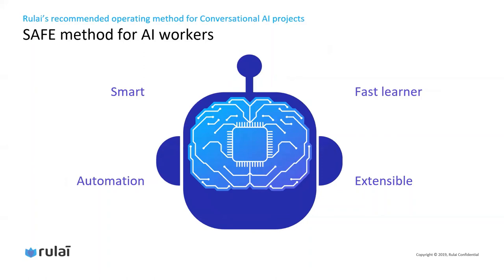That's why we introduced the SAFE method for conversational AI projects. Based on the SAFE method, the project can systematically develop AI workers resembling the virtues of human workers, so that the worker will be smart, empowered to take actions and get the job done through automation. The AI workers should be smart fast learners and be flexible, based on extensive technologies which we will describe later. If the goal is clear at the very beginning and the SAFE method is followed, the project is more likely to be successful and have very good return on investment in the short and long term.